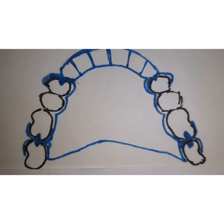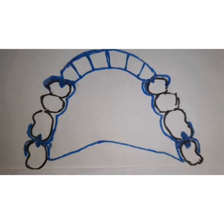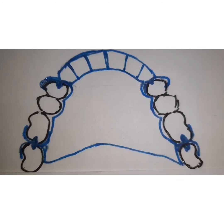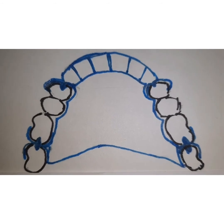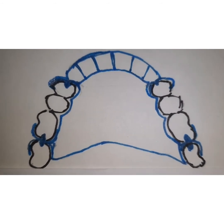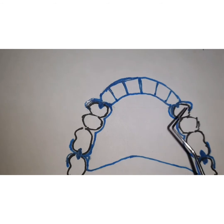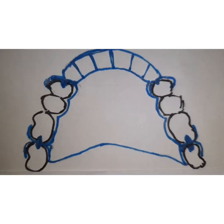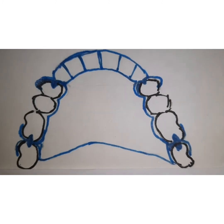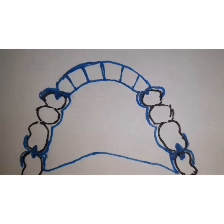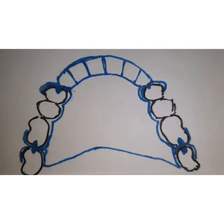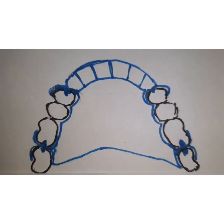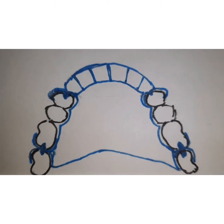Minor connectors should be rigid and should not impinge on the gingival tissues. Your clasp should meet the aesthetic requirement — you can give a bar clasp or an RPI system depending on aesthetics. Indirect retainers should be positioned as far posterior as possible. You should maintain the quadrilateral configuration and preserve it.